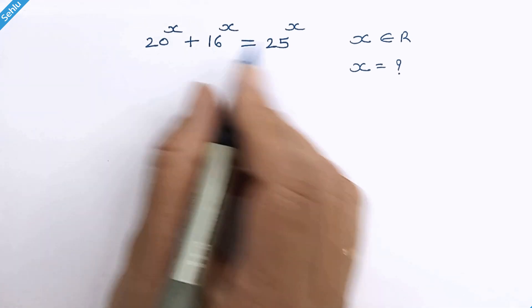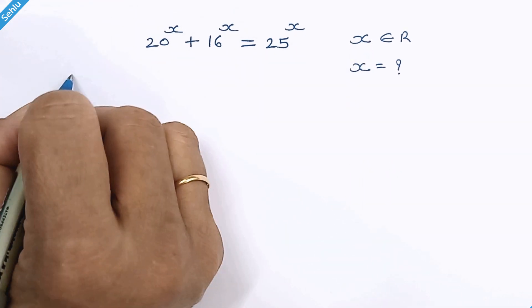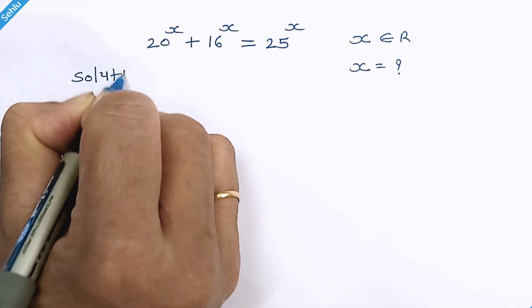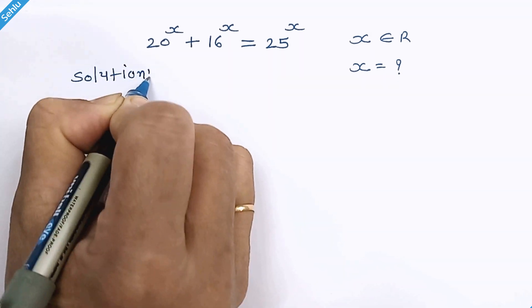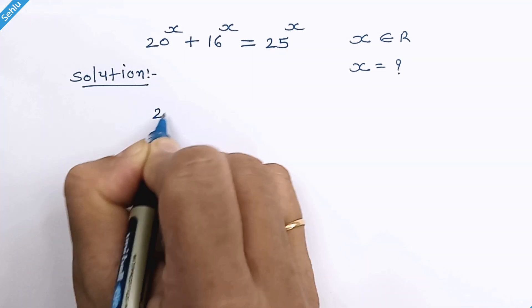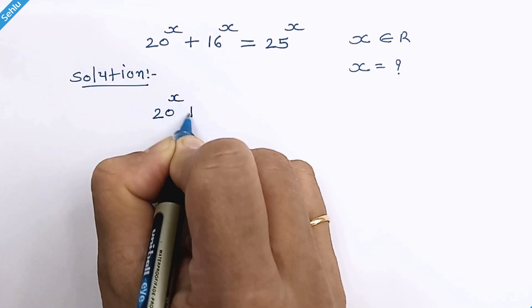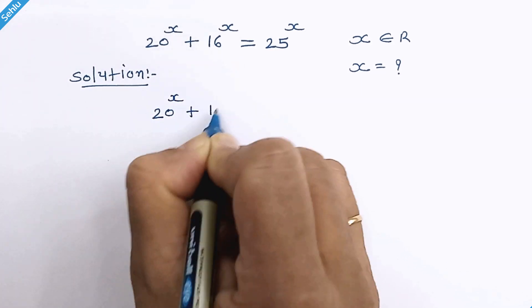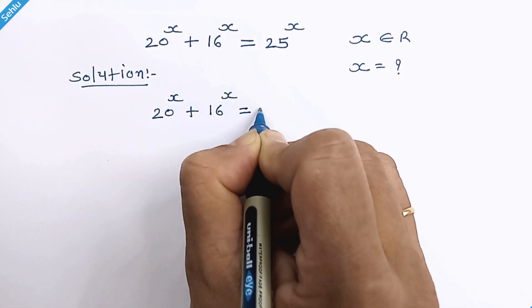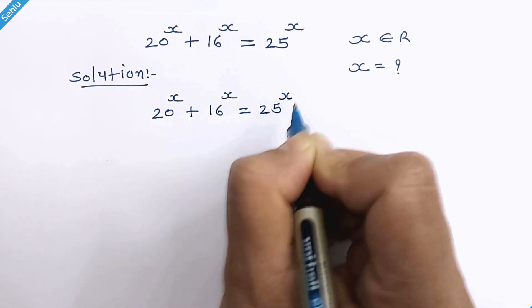Hello friends, let's find the real value of x. Our question is: 20 raised to x plus 16 raised to x is equal to 25 raised to x.